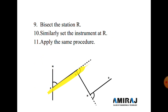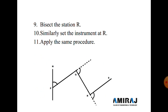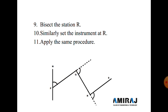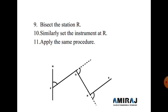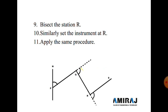Then shift the instrument to station Q, level it accurately, unclamp the lower plate, and take a backsight on station P. Then plunge the telescope — the line of sight will be in the direction of PQ extended. Set the vernier A to zero, release the upper clamp, turn the telescope clockwise, and bisect station R. The angle measured at this point is called the deflection angle. This same procedure is applied from R to S and so on.